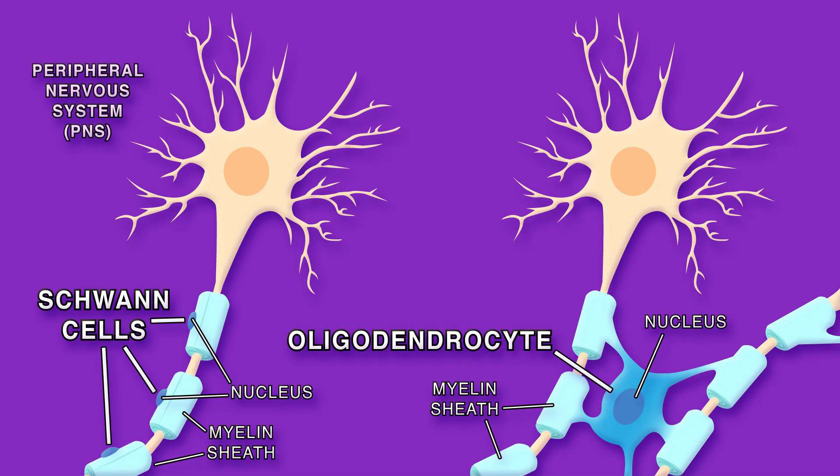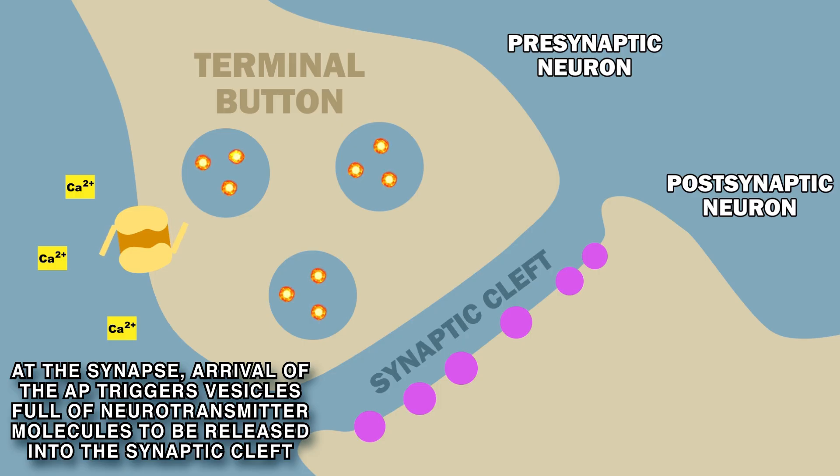The action potential's arrival at the terminal button triggers release of chemical messengers, called neurotransmitters.